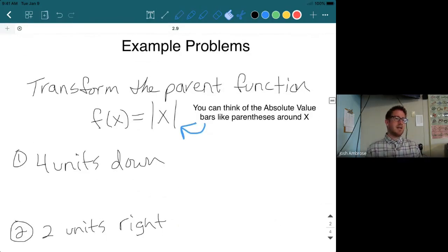Let's jump into our example problems. Here we go. So we are asked to transform the parent function f(x) equals absolute value x. And I just wanted to present that basically you could think of those absolute value bars just like parentheses around x. So if something is inside the absolute value bars right next to x, you know that that is directly affecting the x value. If you put it outside the absolute value bars, then that means it is affecting the whole function. Inside the absolute value bars means it's affecting x. Outside the absolute value bars means it's affecting the whole function.